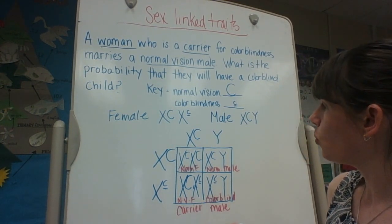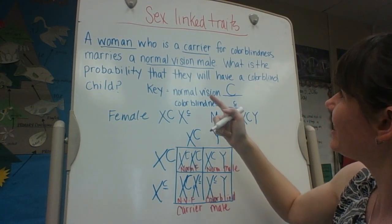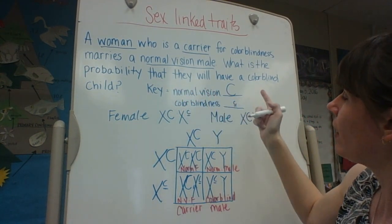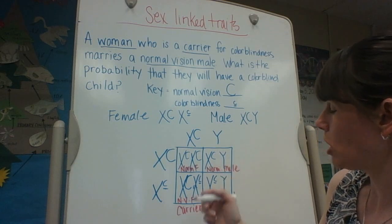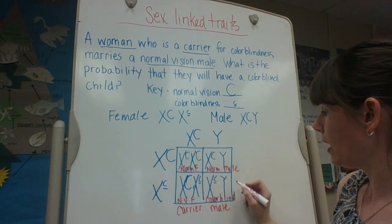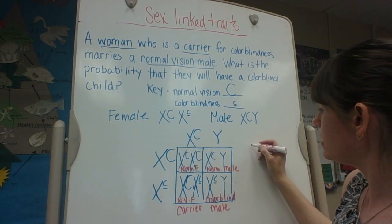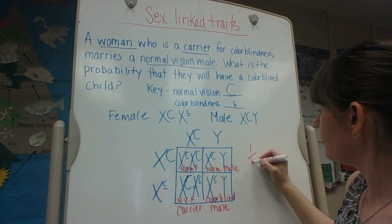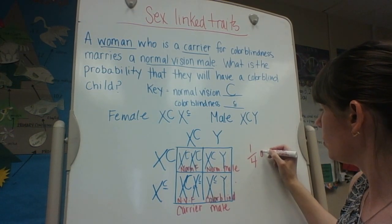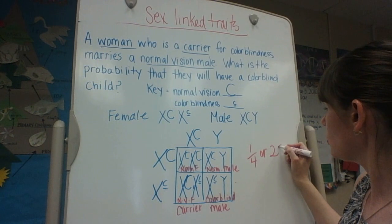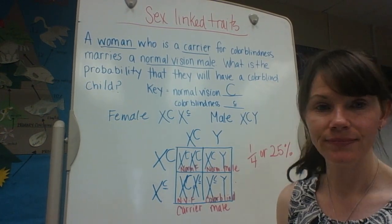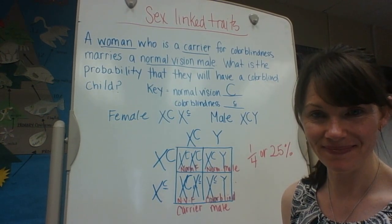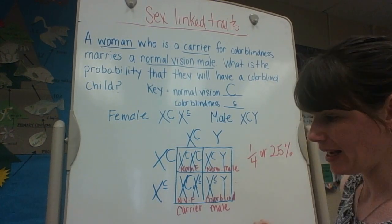What's our percent probability that they will have a colorblind child? We can see it'll be 1 out of 4, or 25%.